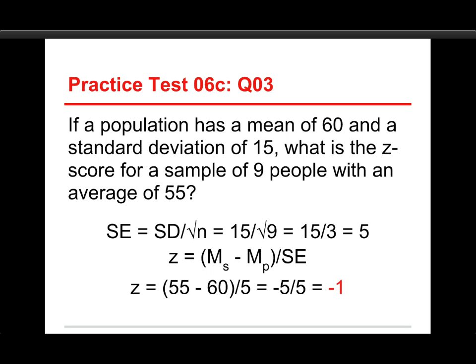Let's take a look at this. First we do the standard error. So standard deviation divided by the square root of the sample size, that's 15 divided by the square root of 9. 15 divided by 3 equals 5. That's easy. And then the z-score, we get the mean of the sample, that's 55, and subtract the mean of the population, that's 60, and divide by the standard error that we just calculated, that's 5. So 55 minus 60 is minus 5, divide by 5, and you get minus 1.